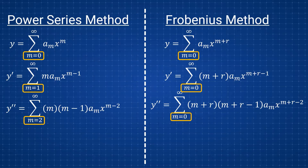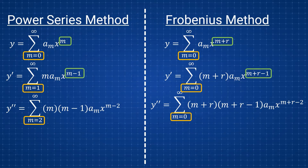Another key difference is that the power of x is not just m but m plus r, and that affects the derivatives too — instead of m minus one you get m plus r minus one, and instead of m minus two you get m plus r minus two. Also note that the power series yields only one solution, while the Frobenius method gives two solutions depending on the roots for r.